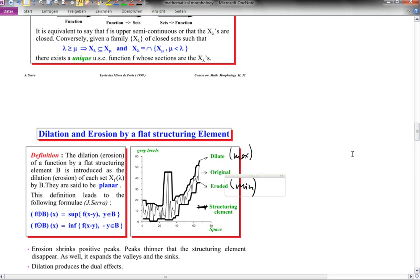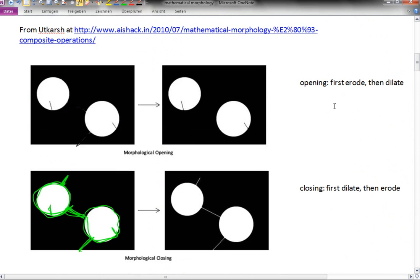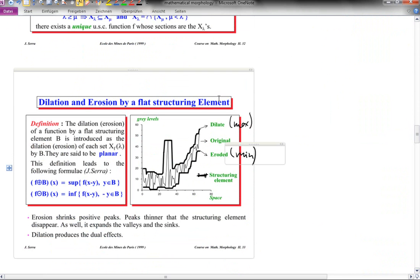Then operations like the morphological opening, where you first erode and then dilate. You can represent this as a sequence of two non-linear operators. You first apply your minimum filter to the raw image and then you apply the maximum filter to the result. That gives you an opened version of your original image. Note again that these rank order filters are non-linear in nature.